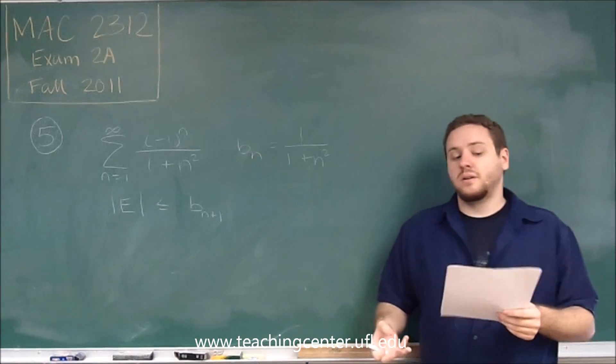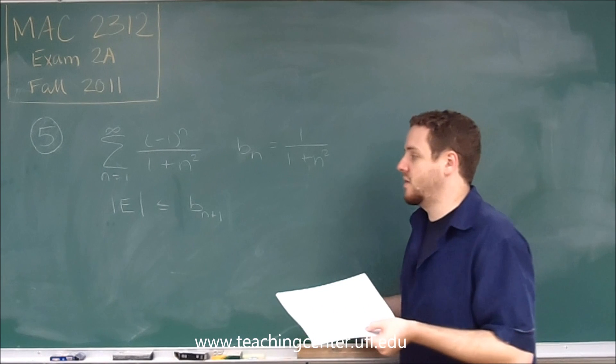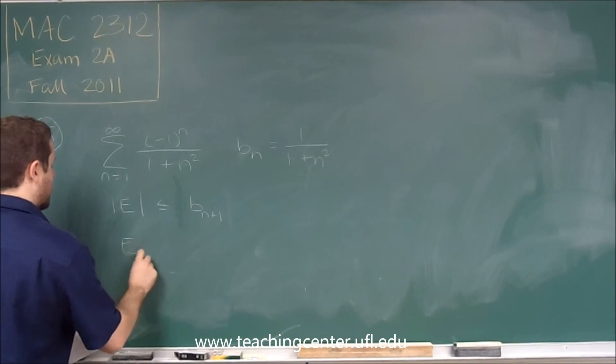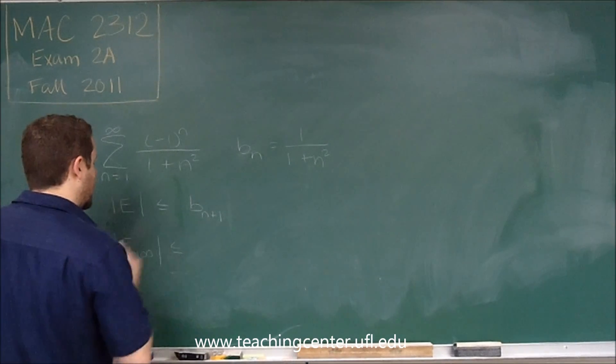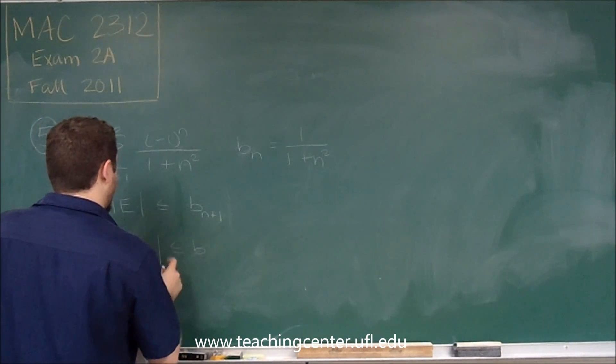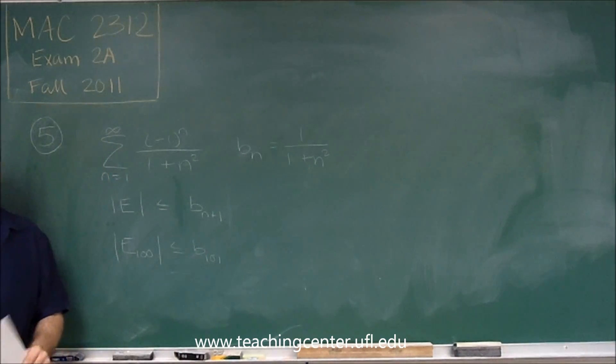We want the error by approximating with 100 terms. Therefore our error is less than or equal to - let me write this as E_100. The error in approximating by 100 terms is going to be less than or equal to b of the next term. The next term would be the 101st term.